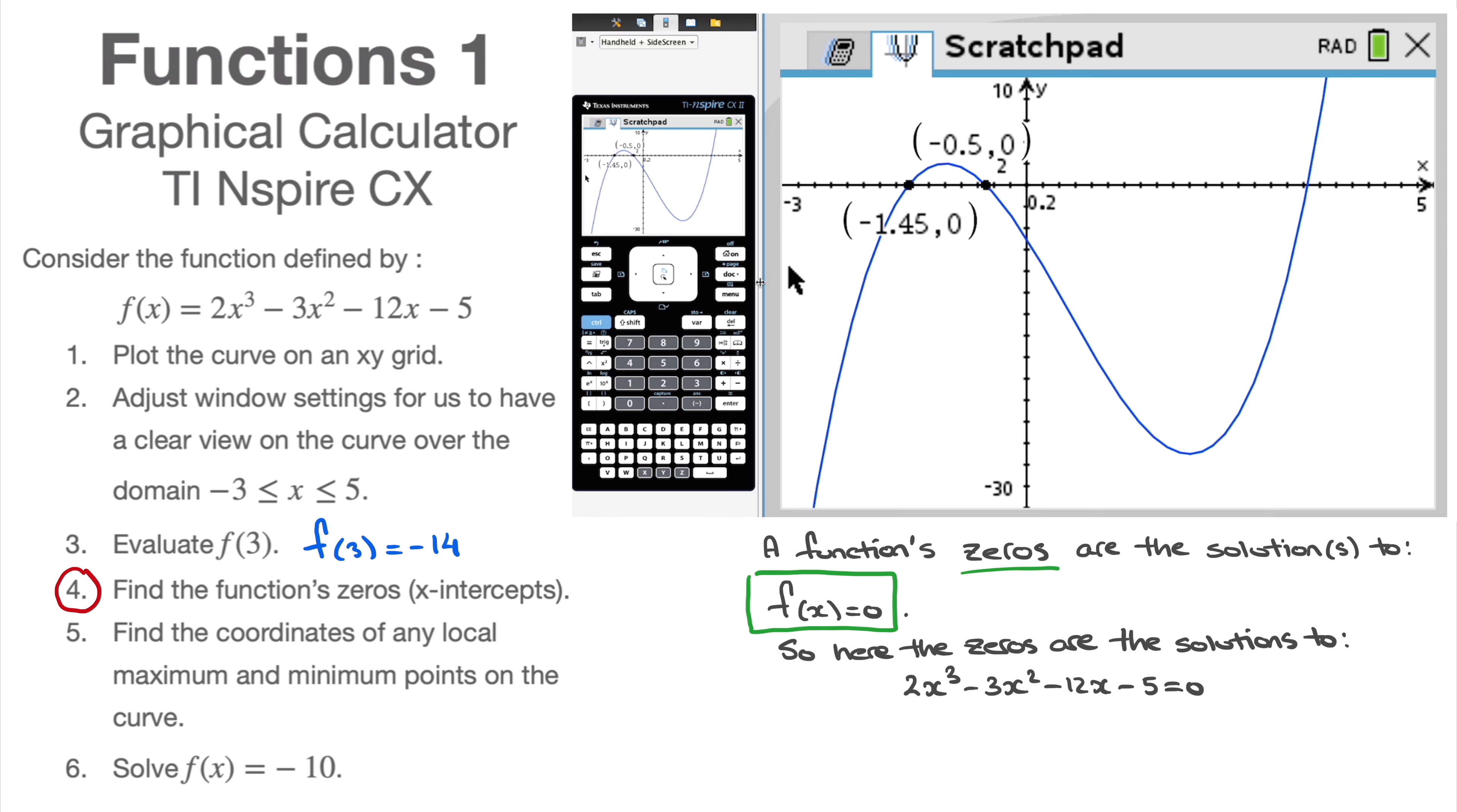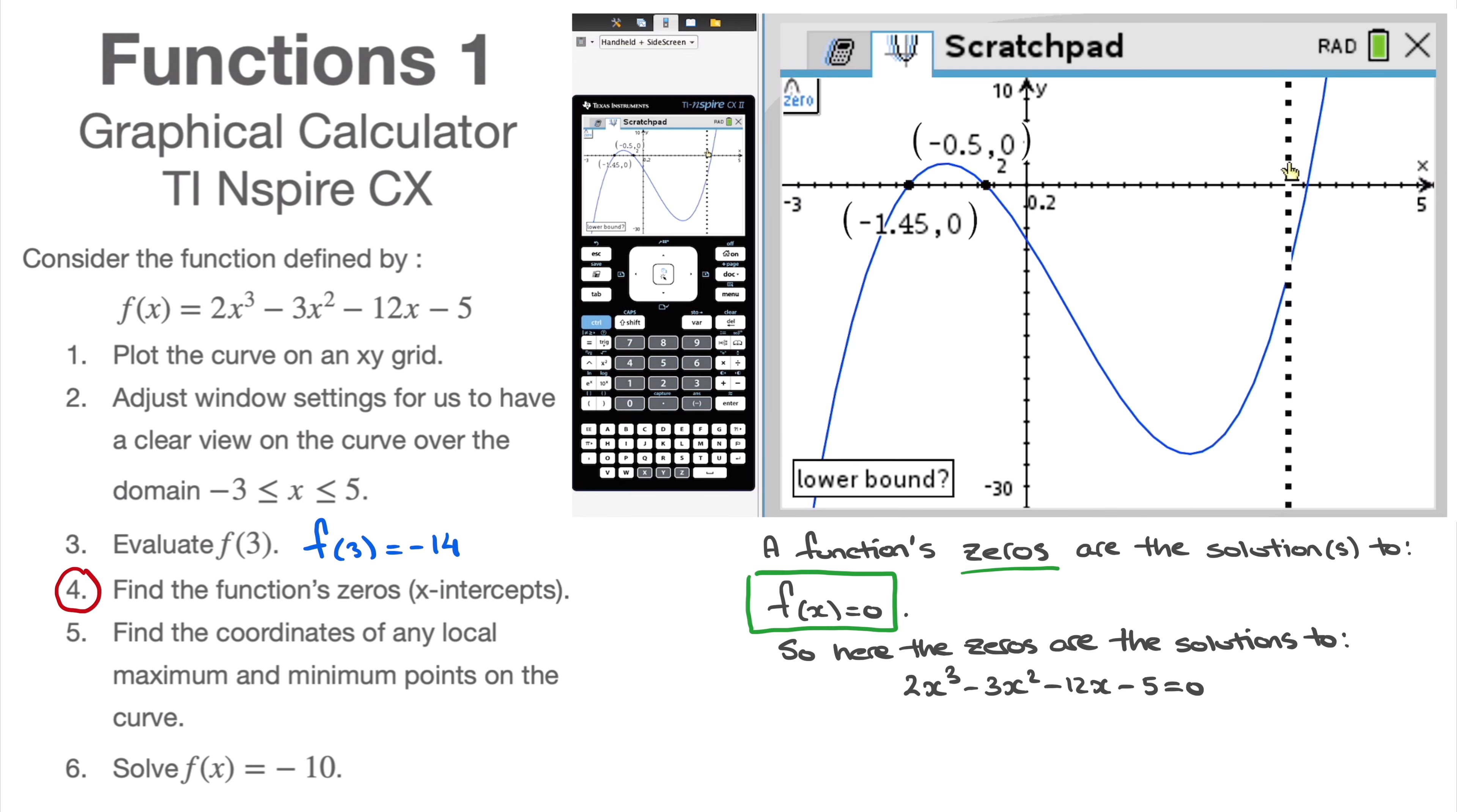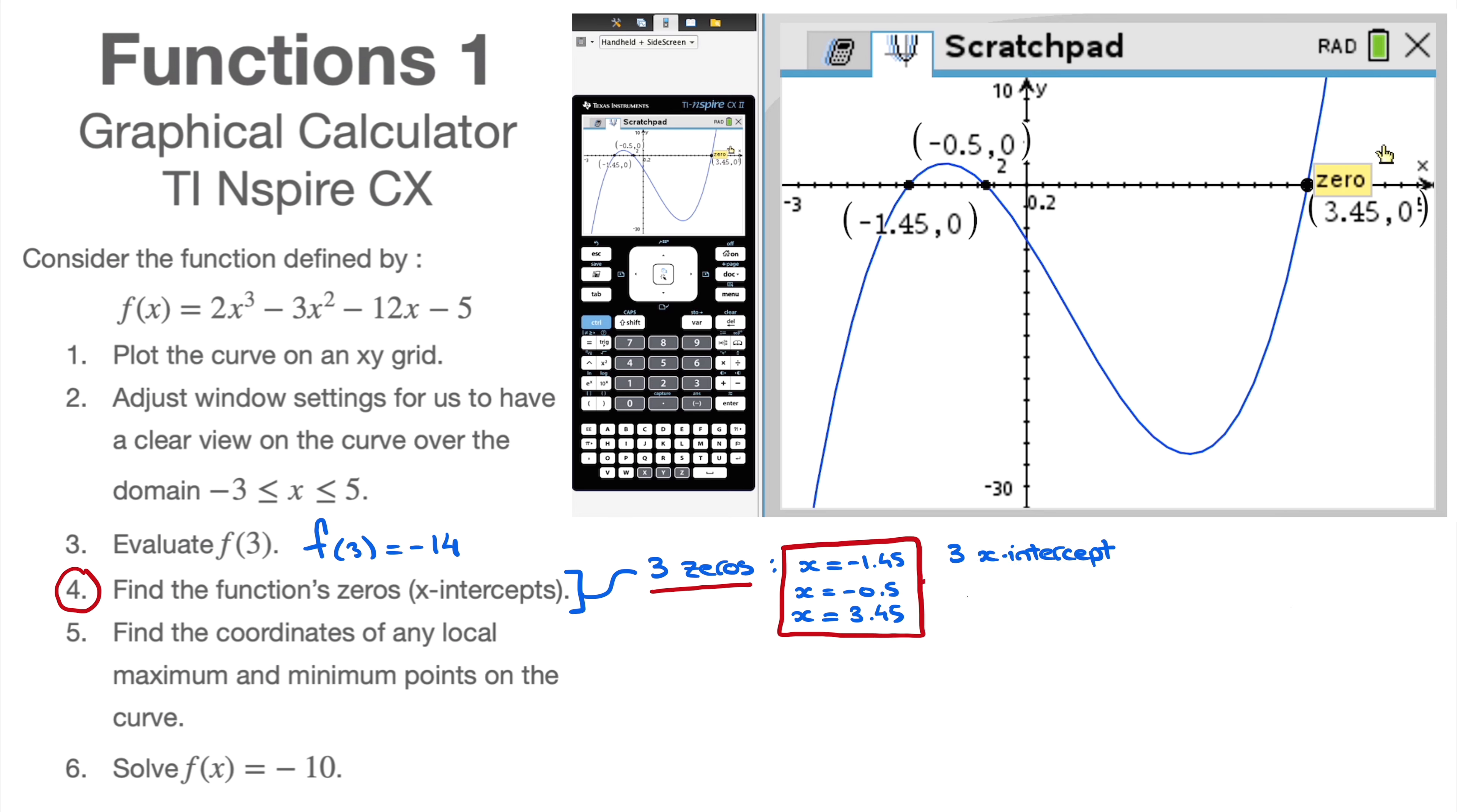Finally, for the last one, I follow the same steps again. I'm looking for this one over here. Menu, analyze graph, zero again. Lower bound means go to the left, click, go to the right, click. I now have the third solution to that equation, which would be 3.45. And of course, I could also state the third x-intercept, which is 3.45, 0. Done. That's this question four answered.